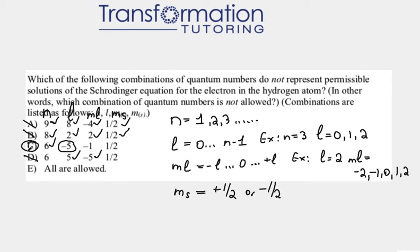Therefore, c must be our answer. Because when n is equal to 6, l cannot be equal to minus 5, because it has to go from 0 to n minus 1.